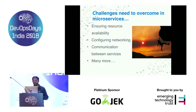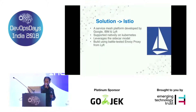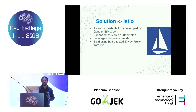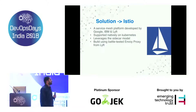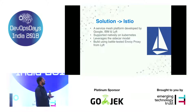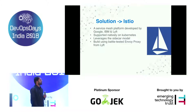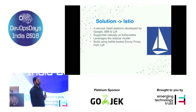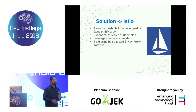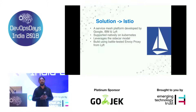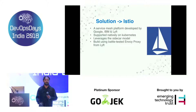The solution is Istio. Istio is a service mesh — it's an open source project developed by Google, IBM, and Lyft. It's supported on Kubernetes, leverages the sidecar model, and uses Envoy proxy, which was developed by Lyft.